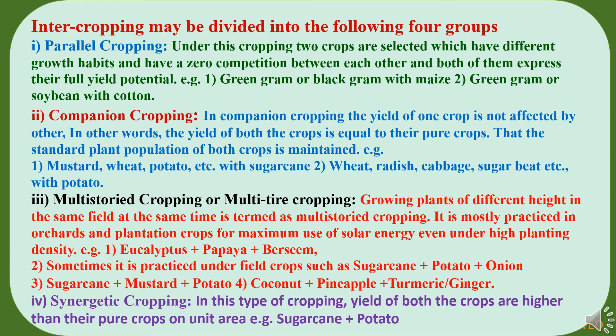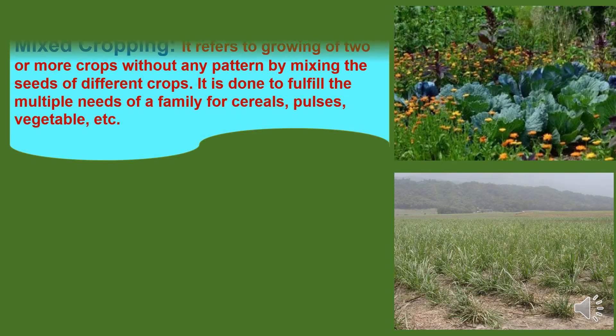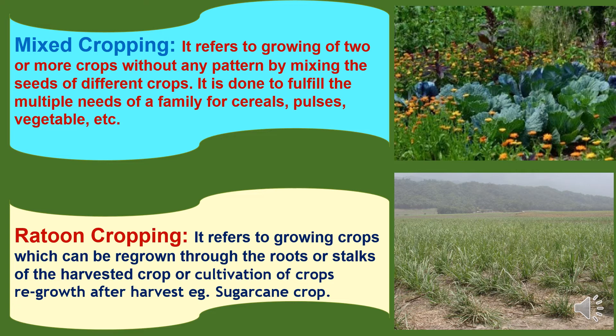The fourth group is synergistic cropping, where the yield of both crops is higher than their pure crops on a unitary basis, like sugarcane grown with potato. Next is mixed cropping, which refers to growing of two or more crops without any pattern by mixing the seeds of different crops. It is done to fulfil the multiple needs of a family for cereals, pulses, and vegetable crops. And then ratoon cropping refers to growing crops which can be regrown through the roots or stalks of the harvested crop, or the cultivation of crop regrowth after harvest, like sugarcane crop.